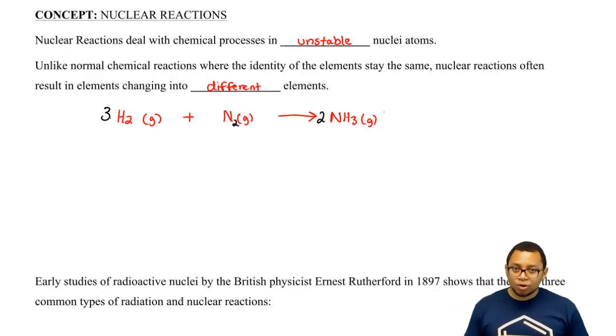Remember, your protons or your atomic number represents the identity of that element. Every element has its own unique atomic number that no other element has. But in nuclear reactions, we're actually messing around with the number of protons, which results in us creating completely new and different elements.